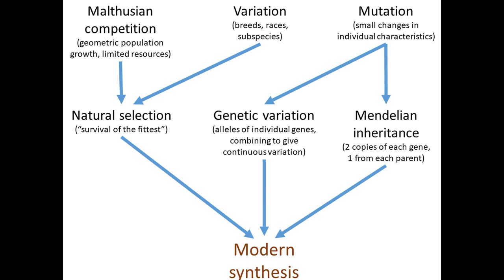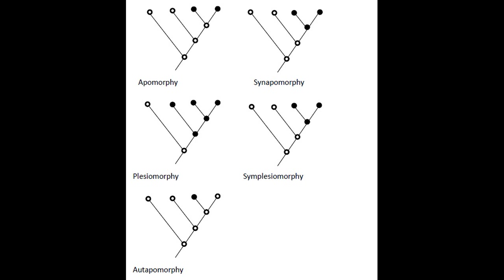Thus, by the early 1940s, neo-Darwinism was solidified as biological orthodoxy. That doesn't mean, however, that researchers stopped investigating mechanisms and trends in evolution — quite the opposite. In the 1950s, German entomologist Willy Hennig founded the field of phylogenetic systematics, or cladistics, coining terms like synapomorphy, plesiomorphy, and paraphyly. And Hennig clearly regarded macroevolution as just a string of microevolution.